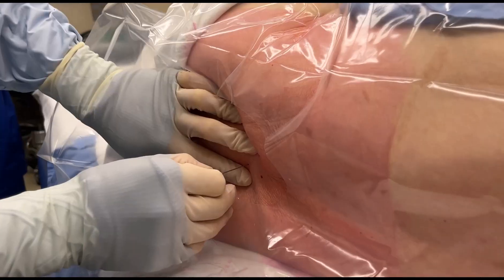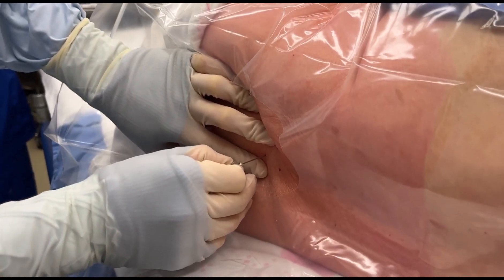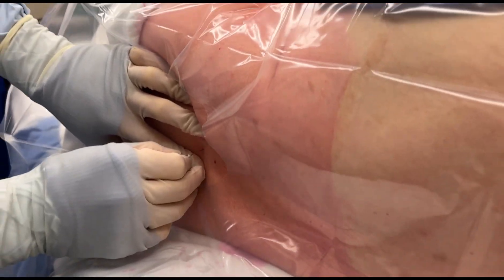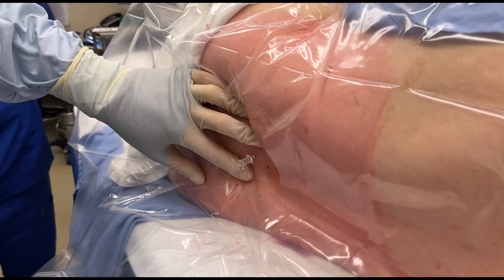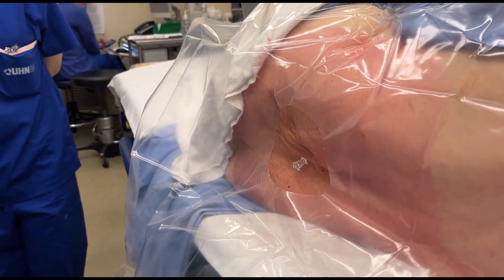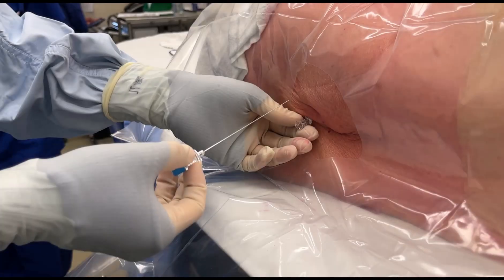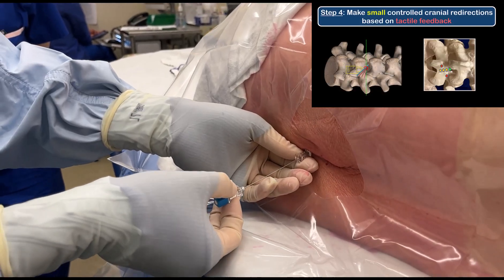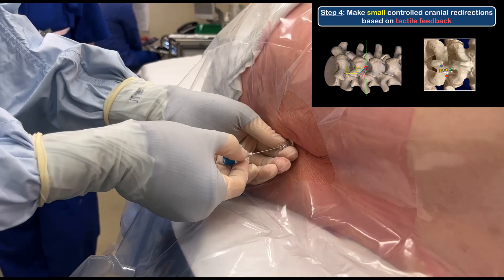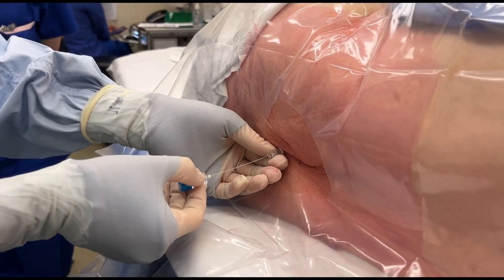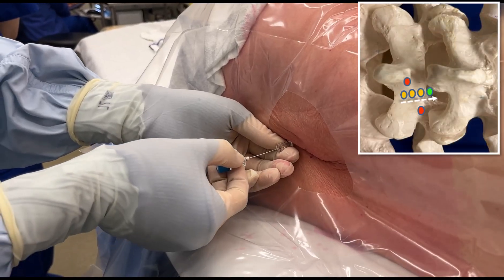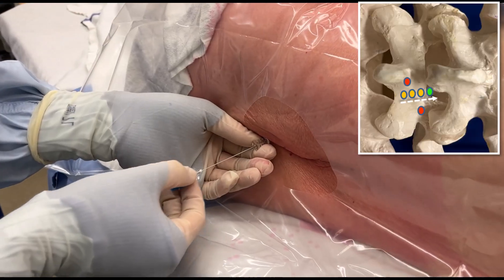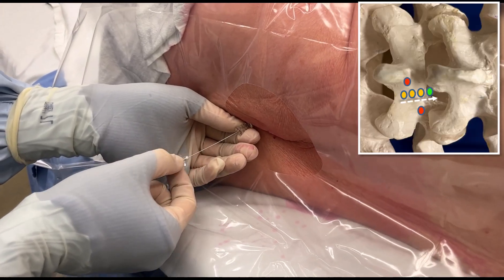Once the introducer needle is seated in the paraspinal muscle, fixation of the overlying skin is no longer necessary. Hold the introducer hub from below — this will not obstruct your view of the needle and will also prevent you from inadvertently flattening the lateral to medial angle. Insert the spinal needle with control and pay attention to the tactile feedback from the tip. The soft feel of muscle is followed by either the rubbery resistance of ligamentum flavum or bony contact. If bone is contacted, withdraw the spinal needle into the introducer and adjust the trajectory cranially. Keep the lateral to medial angle constant — only change direction in the cranial-caudal axis.